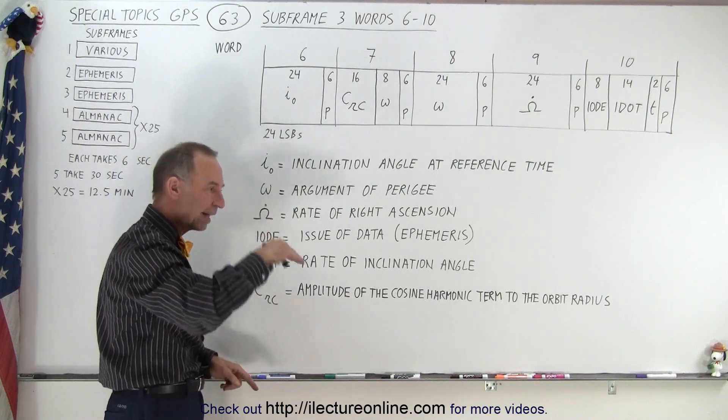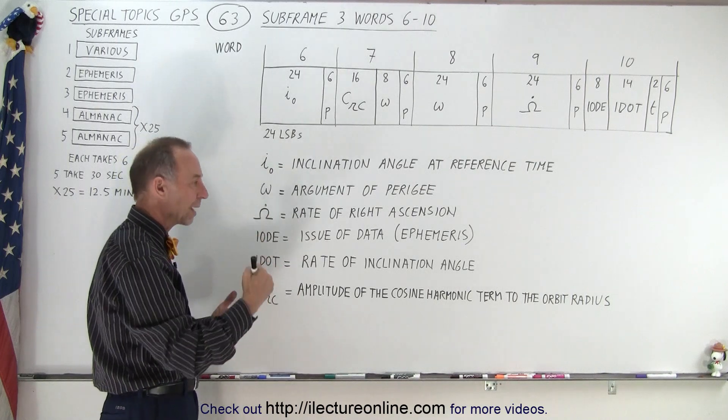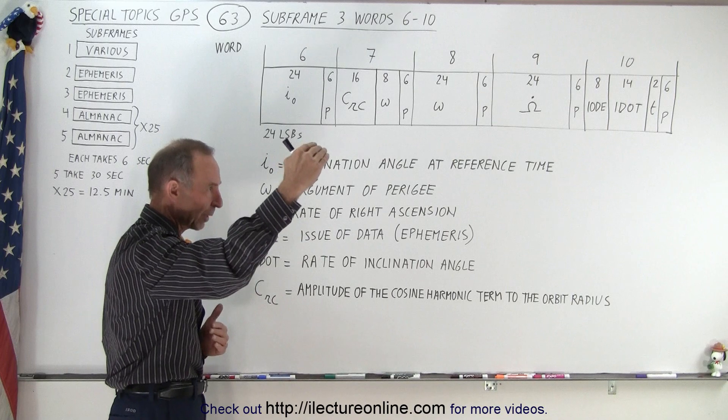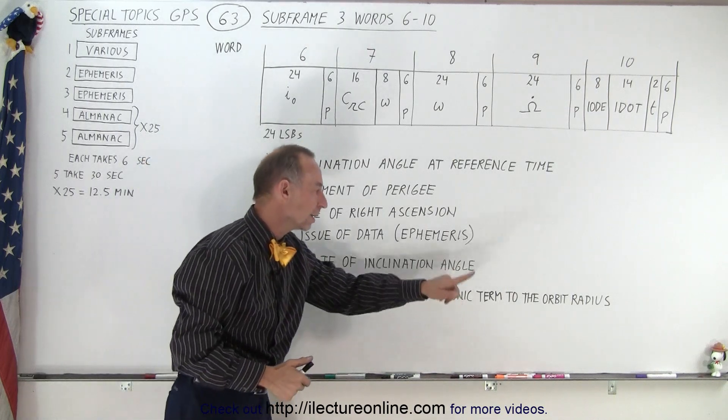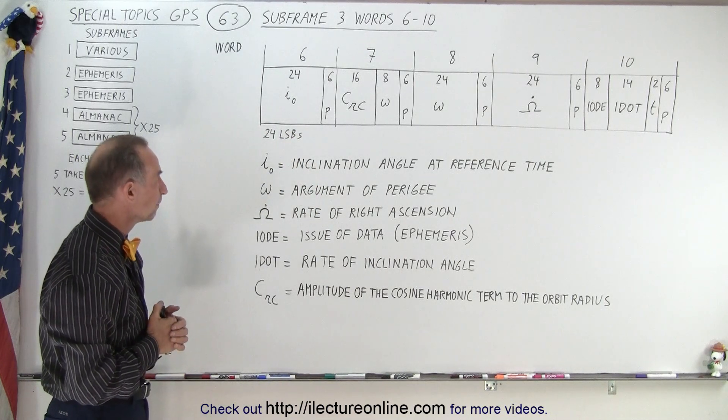And we have, of course, a sinusoidal or a cosinusoidal wave that can describe the change in the orbit radius as it goes around, of course, the orbit radius gets bigger and smaller. And so we have the amplitude of that cosine harmonic term to the orbit radius, and that's contained in those 16 bits in word 7.